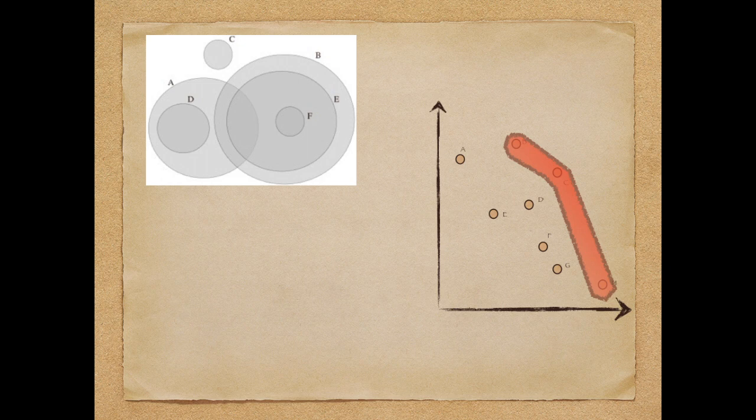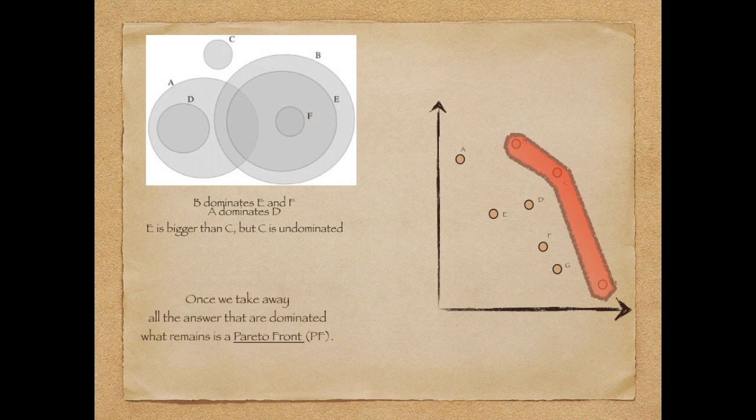And here, each proposal is actually a circle, is actually a set. And a set dominates another set if it contains the other set. So B dominates E, which dominates F. A dominates D. And so the Pareto Front is A, B, and C. Notice that C is smaller than E, but C is in the Pareto Front, and E and F and D is not.